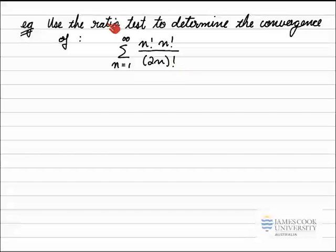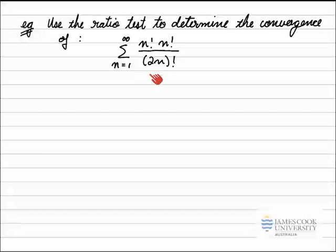But the question says to use the ratio test. To start the ratio test we look at the ratio between the general term aₙ and aₙ₊₁. It's always a good idea to write them down first. aₙ, the general term, is whatever is to the right of the summation sign: n factorial times n factorial over 2n factorial.